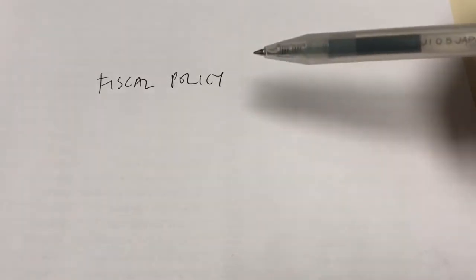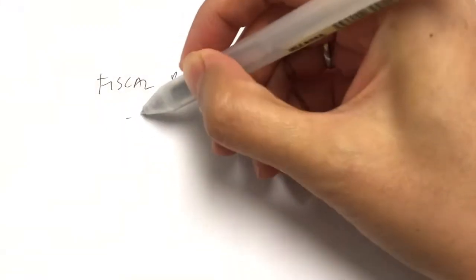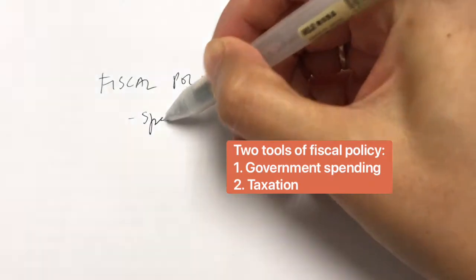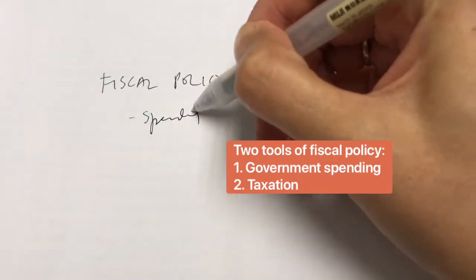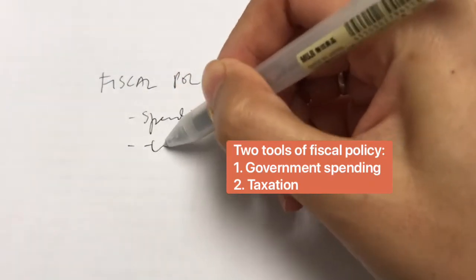Fiscal policy is basically policies that the government uses in order to influence spending and taxes. Those are the basic tools of fiscal policy — spending and taxes.